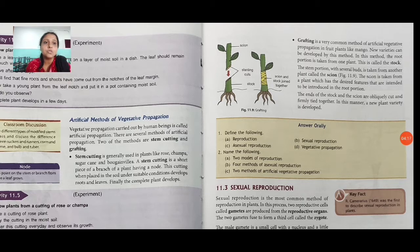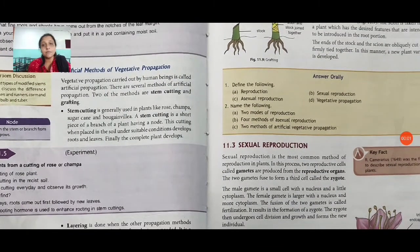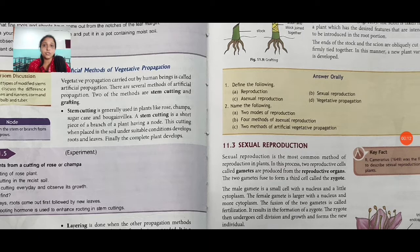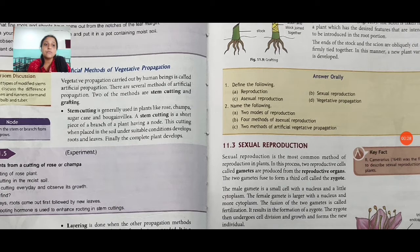You can see here in the figure we have the stock, and we tie the two different stems together. Now about sexual reproduction: the things we discussed were all asexual reproduction. In sexual reproduction we need two plants. Sexual reproduction is the most common method of reproduction in plants. In this process two reproductive cells called gametes are produced from the reproductive organs, and the two gametes fuse to form a cell called the zygote.